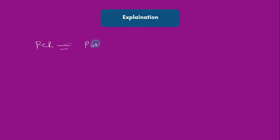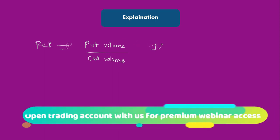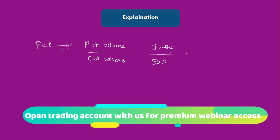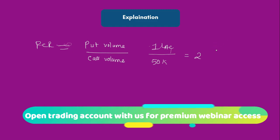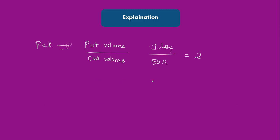PCR is nothing but put volume divided by call volume. For example, say for any stock put volume is 1 lakh and call volume is just 50,000 — PCR would be 2. That means put volumes are literally double the call volume, indicating that the market is highly bearish. Similarly, say put volume is 50,000 and call volume is 1 lakh, then PCR value would be 0.5, indicating that the market is highly bullish.